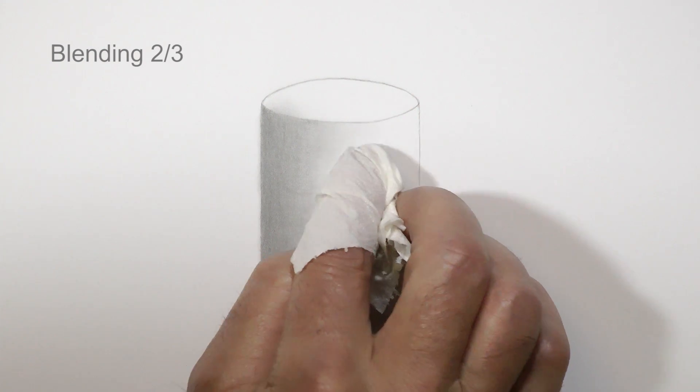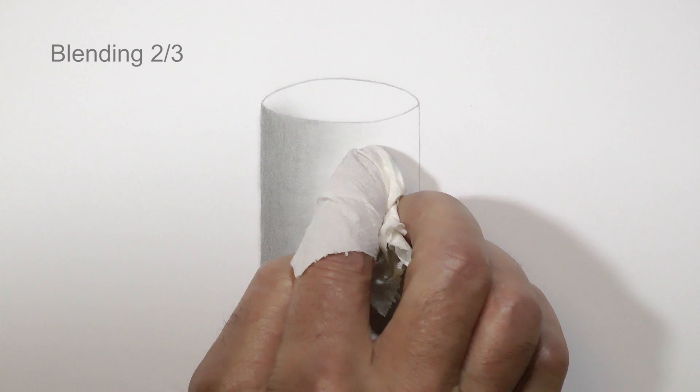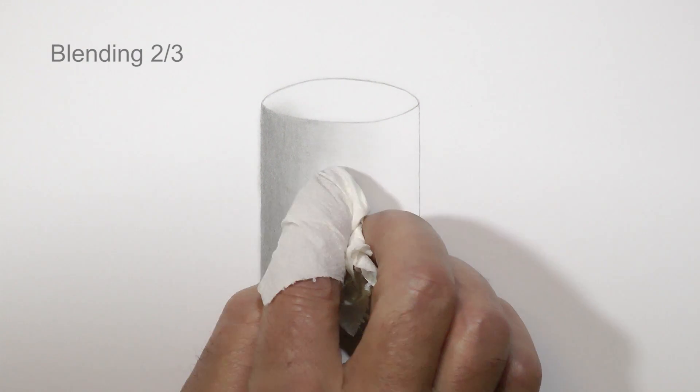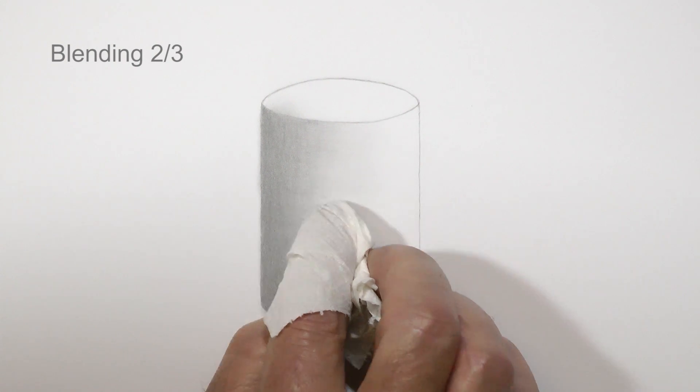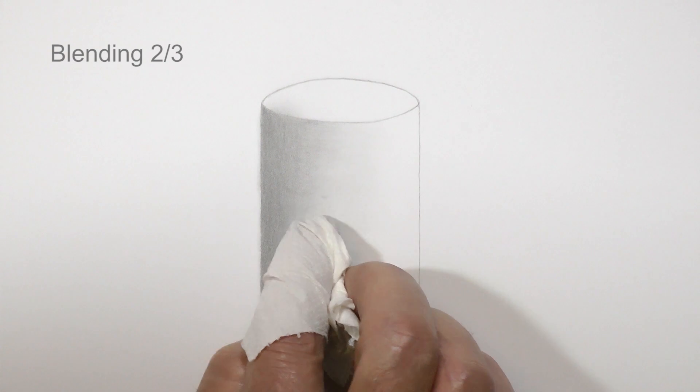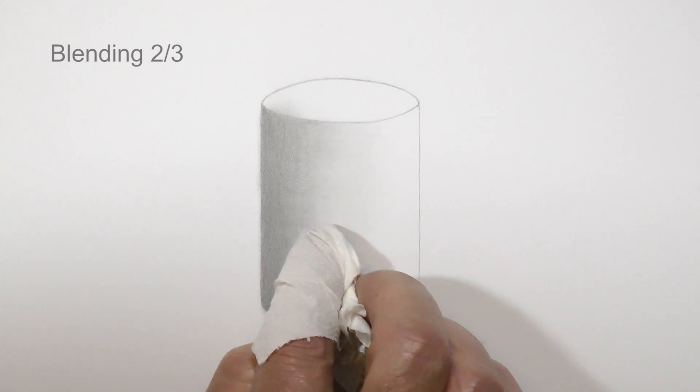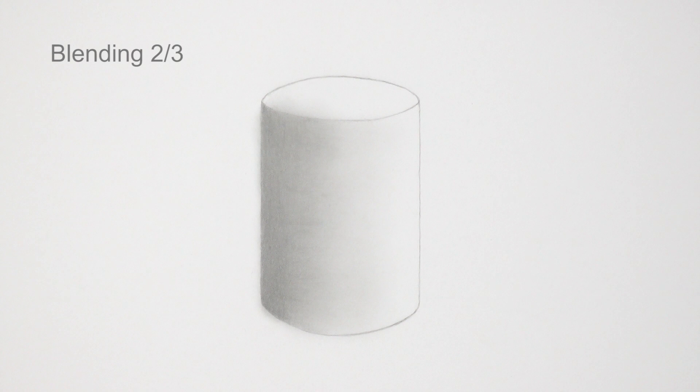As you approach the right hand quarter, reduce the pressure of your finger, which in any case should be very light. The goal is to gently spread the 2H graphite into the white area in a subtle way that is very difficult to achieve by drawing alone. Don't necessarily expect the same results as I'm achieving. This is on super smooth Conqueror diamond white, which allows for very smooth blending.